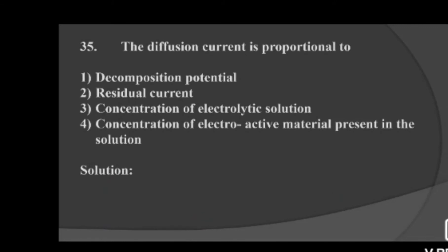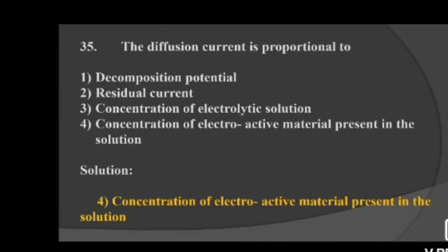Next question: the diffusion current is proportional to — option 1: decomposition potential, option 2: residual current, option 3: concentration of electrolytic solution, option 4: concentration of electroactive material present in the solution. In polarography, the diffusion current is proportional to the concentration of electroactive material present in the solution — option 4 is correct.